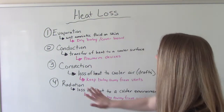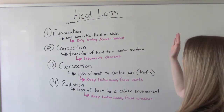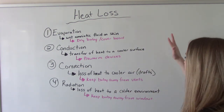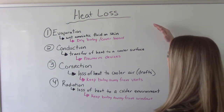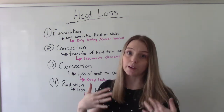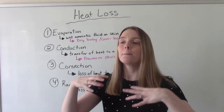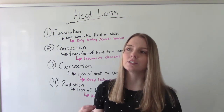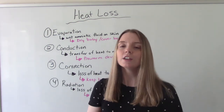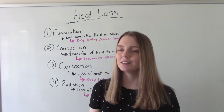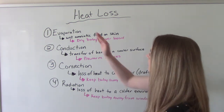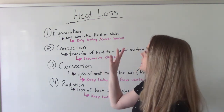Now all of these types of heat loss are applicable to all humans of all ages. But I wanted to talk about them specifically when it comes to infants, because they lose heat a lot quicker than we do. Just because they are so small, their body surface area is larger, their skin is thinner, and the capillaries are so much closer to the surface. So there are a lot of physiological reasons why an infant would lose heat quicker than we do. But we still can experience all four types of heat loss.